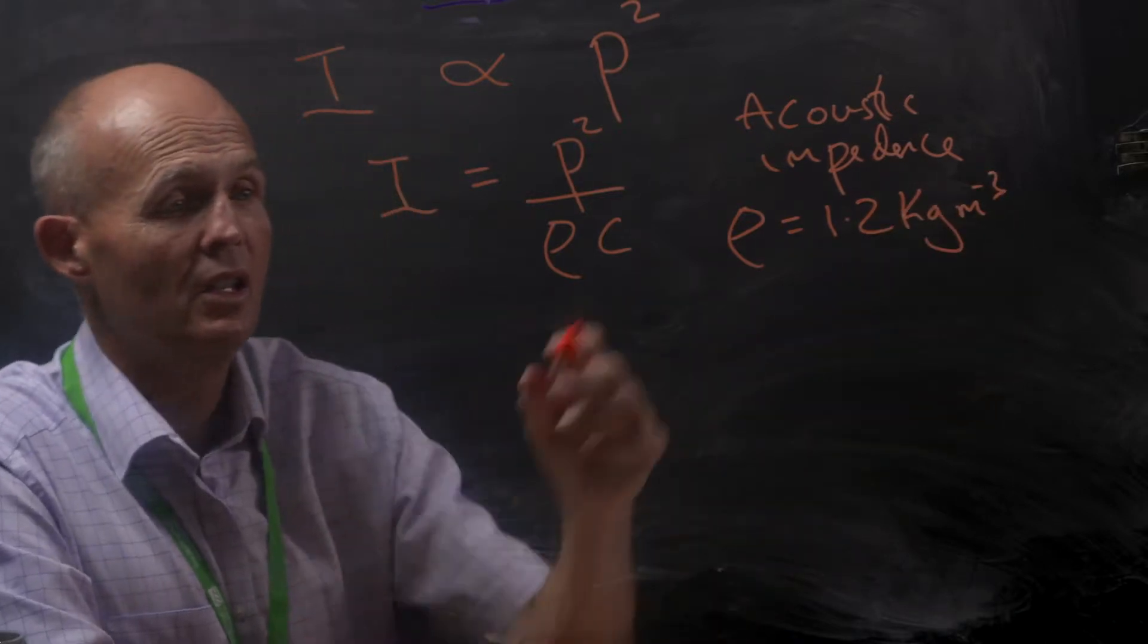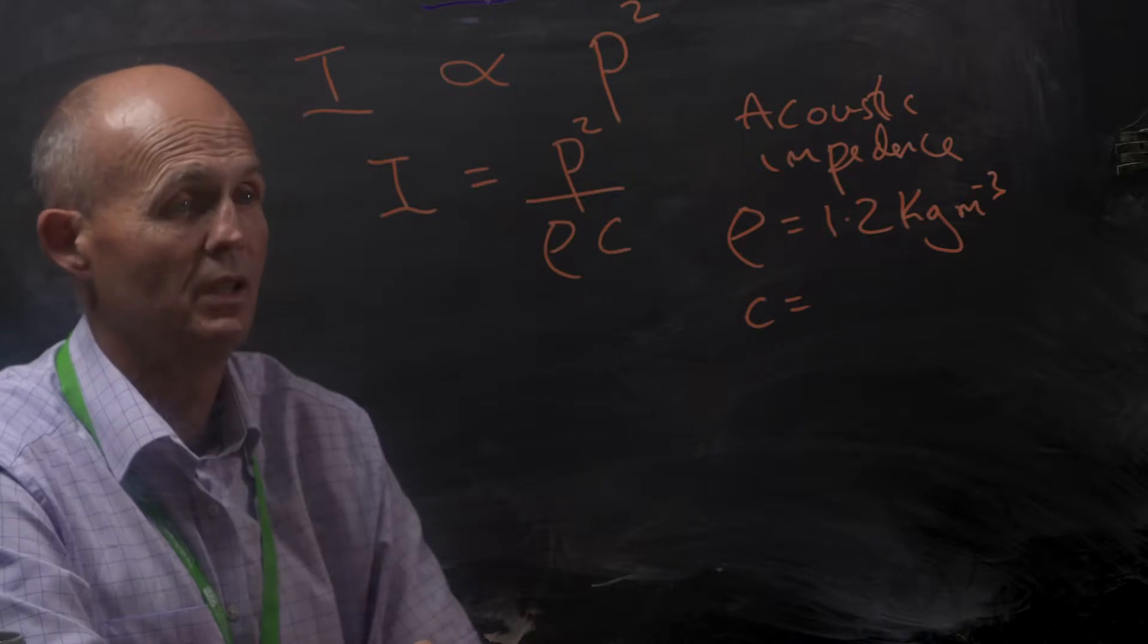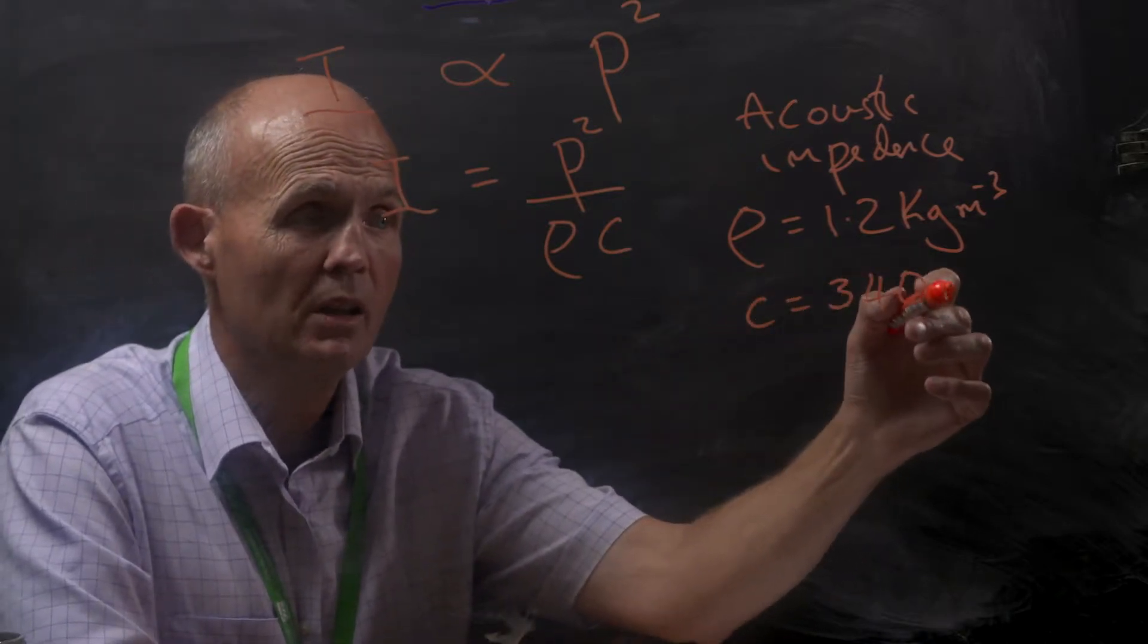And the parameter c is basically the velocity of sound in air, and that's typically around 340 meters per second.